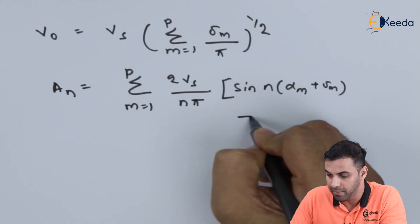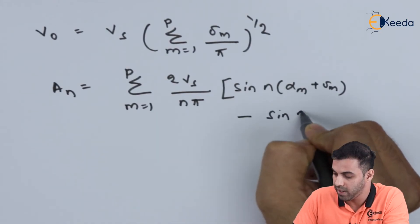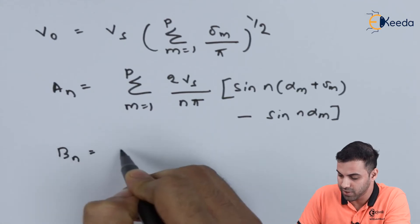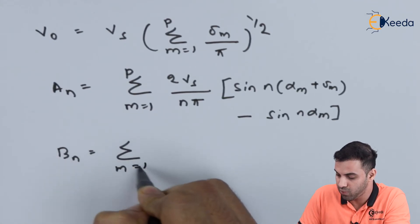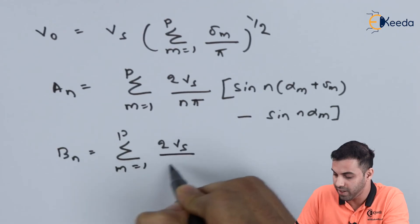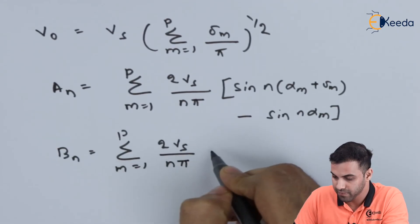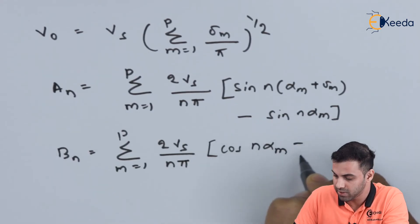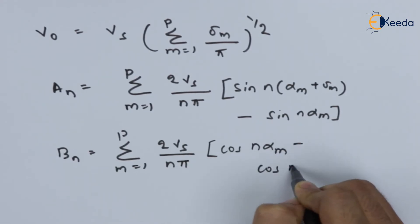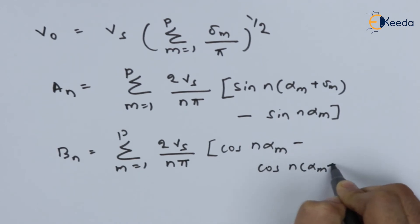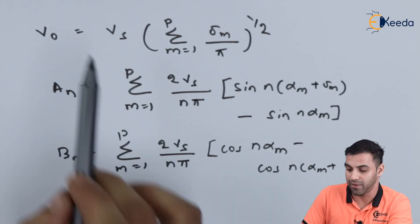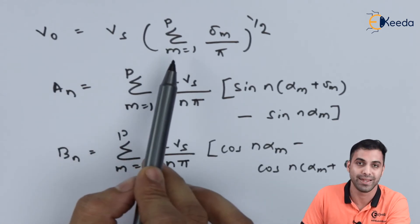And b_n will be equal to summation m equals 1 to p 2VS divided by n pi cos n alpha_m minus cos n alpha_m plus lambda_m. So this will be the value of a_n and b_n and the average value of the output voltage will be this one.